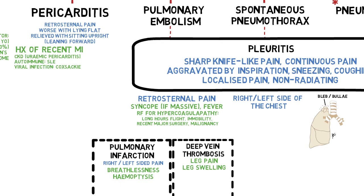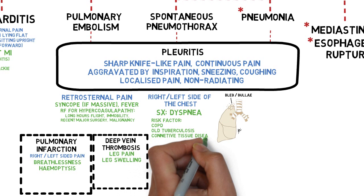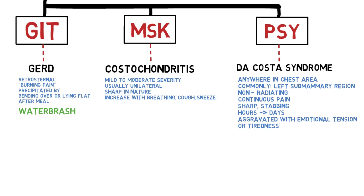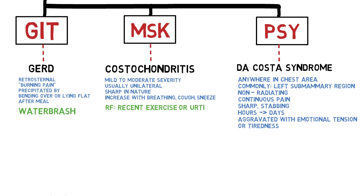In spontaneous pneumothorax, chest pain is associated with dyspnea. Risk factors include long-standing chronic obstructive pulmonary disease, old tuberculosis, connective tissue disease, or asthma. For non-life-threatening diseases, GERD is associated with episodes of waterbrash, which occurs when acid refluxes not only into the esophagus but up to the oral cavity. Costochondritis may follow a recent history of exercise or upper respiratory tract infection. Da Costa syndrome may be accompanied by anxiety symptoms resembling a panic attack, with or without depressive symptoms.